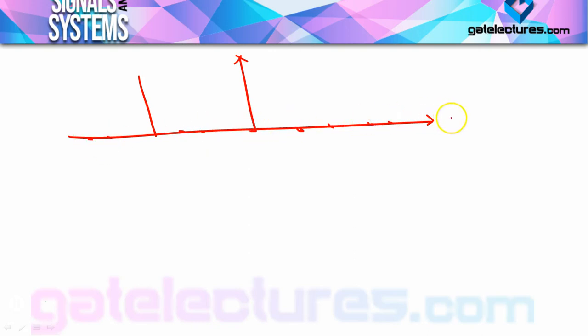This means x[n] will be non-periodic, because for a signal to be periodic it must repeat after every period N. But here x[n] is not repeating — there is only one sample present and all other samples are 0. So this signal is non-periodic.